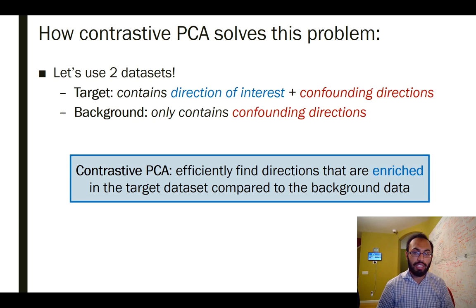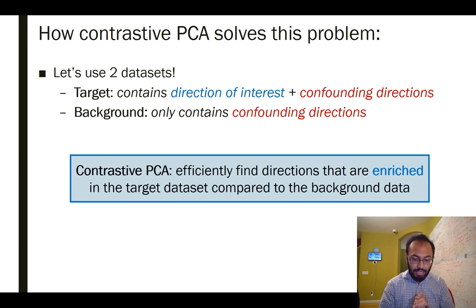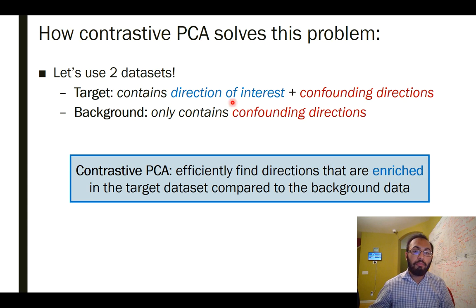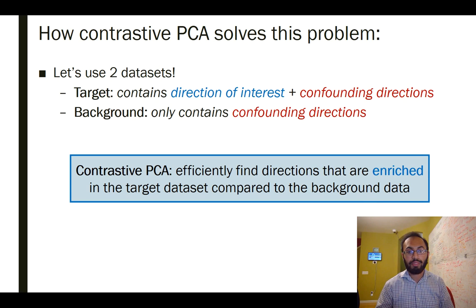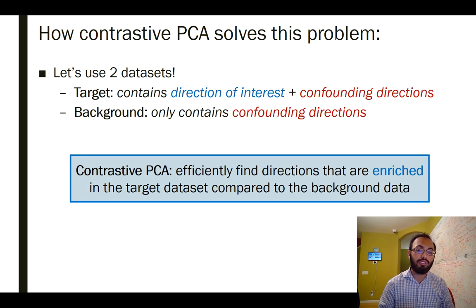So we introduced contrastive PCA — how does that help solve this problem? The basic idea is to use two data sets. The target data set, what we actually want to analyze, contains a direction of interest but also contains confounding directions — directions that have high variance but are not of interest to us. So we bring in a background data set that only contains those confounding directions that are present in the target data set. The basic idea behind contrastive PCA is to efficiently find those directions that are enriched in the target data relative to the background.